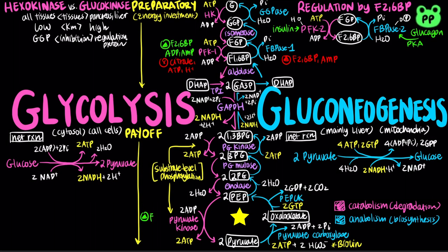Lastly, pyruvate kinase is activated by fructose-1,6-bisphosphate and inactivated by ATP, alanine, acetyl-CoA, and long-chain fatty acids. Whereas both pyruvate carboxylase and phosphoenolpyruvate carboxykinase are inhibited by ADP, and pyruvate carboxylase is activated by acetyl-CoA.